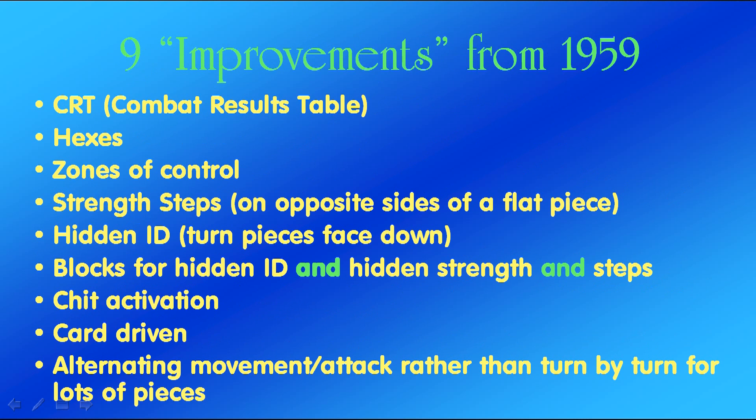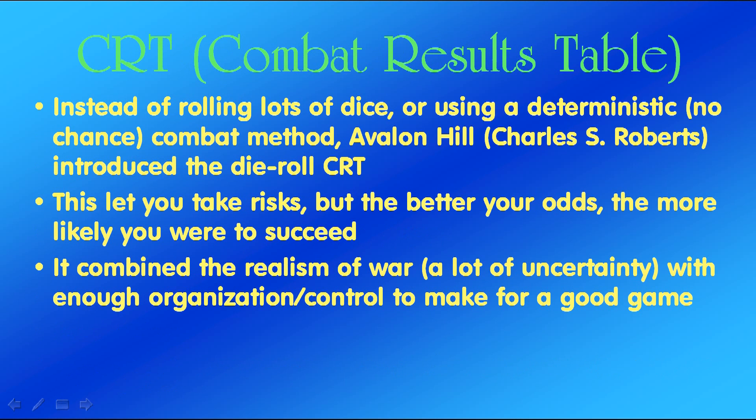Here are the nine improvements — I'm going to talk about each one in turn. First is the Combat Results Table, or CRT, developed by Avalon Hill and specifically Charles S. Roberts. Instead of rolling lots of dice or using a deterministic — that is, no-chance — combat method, Avalon Hill introduced the die-roll CRT. This lets you take risks, but the better your odds, the more likely you were to succeed. It combined the realism of war — a lot of uncertainty — with enough organization or control to make for a good game. And Avalon Hill made many, many games with CRTs.